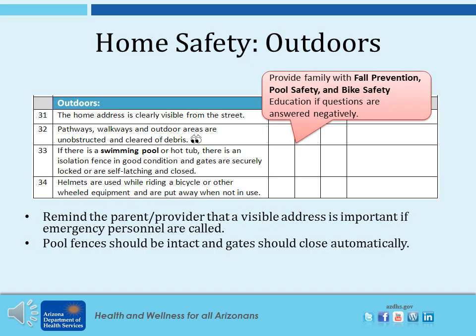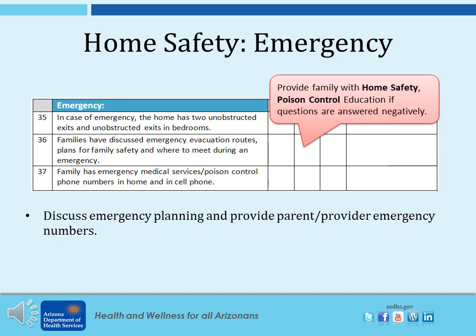For outdoor safety, make sure the home address is clearly visible from the street, pathways are cleared of debris, and if there is a swimming pool, there is an isolation fence in good condition and gates are securely locked or are self-latching and closed. Helmets should be used while riding a bicycle or other wheeled equipment. Remind the parent that a visible address is important if emergency personnel are called, and pool fences should be intact with gates that close automatically. For emergency safety, make sure the home has two unobstructed exits and unobstructed exits in the bedrooms. Families should discuss emergency evacuation routes and have emergency medical services and poison control phone numbers in their home and cell phone.